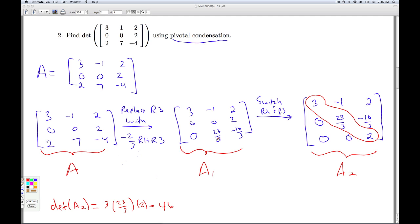Now what I need to do is look at the effect that these row operations had on the determinant of A to figure out how this number corresponds to the determinant of A. Well, let's look here. In order to go from A to A1, I replaced a row with itself plus a multiple of another row. So properties of the determinant tells me the determinant of A is the same as the determinant of A1.